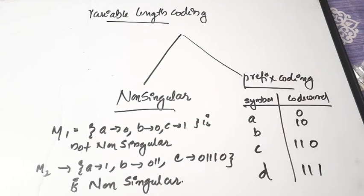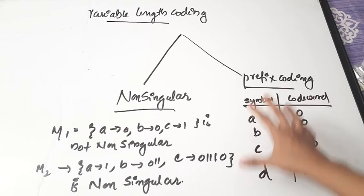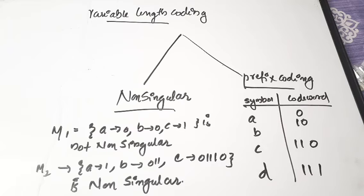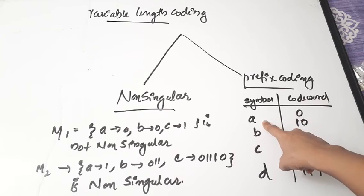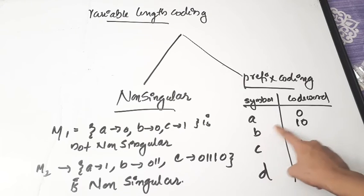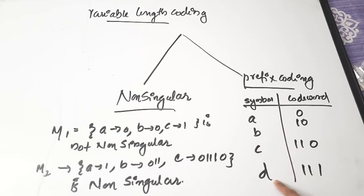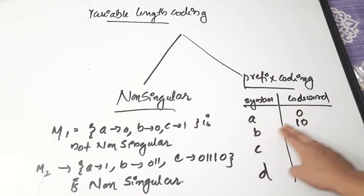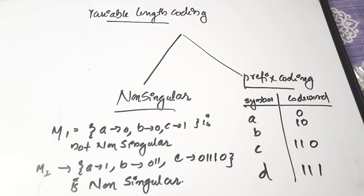The next classification is prefix coding. A code is a prefix code if no code word in the mapping is a prefix of the code word of a different source symbol. For example: A=0, B=10, C=110, D=111. No code word appears as the beginning bits of another code word — '10' is not the start of any other code word, and '110' is not a prefix of any other — so this is a valid prefix code.